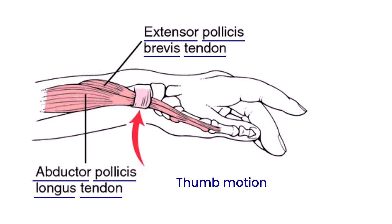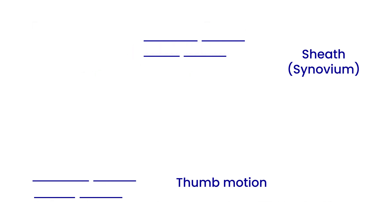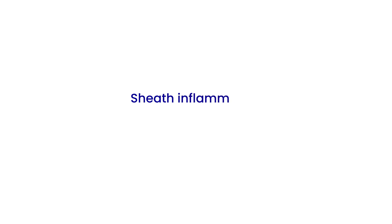This condition involves the restriction or lack of thumb motion. What's important to remember is that these tendons are covered by a sheath, and that sheath or synovium essentially makes an oily fluid that helps the tendons move freely. In tenosynovitis, that sheath becomes inflamed.